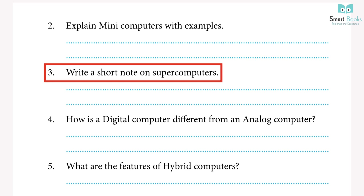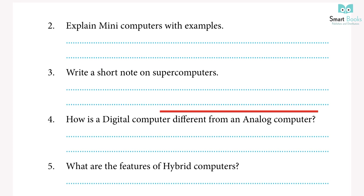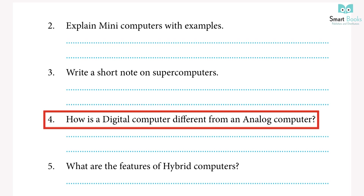3. Write a short note on supercomputers. Answer: supercomputers are the most powerful digital computers. They are capable of handling huge amounts of calculations that are beyond human capabilities. They are usually thousands of times faster than any other computer. They are used for weather forecasting, space research, and satellite control. An example is Param Brahma.